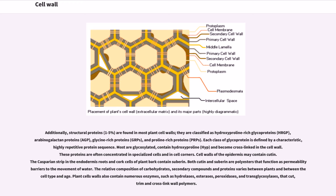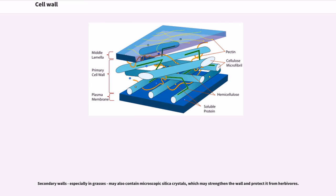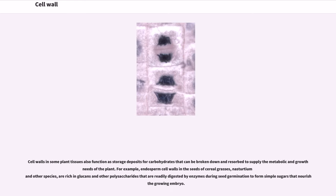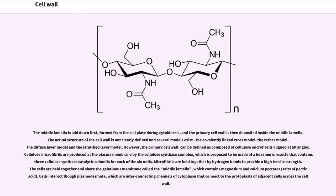These proteins are often concentrated in specialized cells and in cell corners. Cell walls of the epidermis may contain cutin. The Casparian strip in the endodermis roots and cork cells of plant bark contain suberin. Both cutin and suberin are polyesters that function as permeability barriers to the movement of water. The relative composition of carbohydrates, secondary compounds and proteins varies between plants and between the cell type and age. Plant cell walls also contain numerous enzymes, such as hydrolases, esterases, peroxidases, and transglycosylases, that cut, trim and cross-link wall polymers. Secondary walls, especially in grasses, may also contain microscopic silica crystals, which may strengthen the wall and protect it from herbivores. Cell walls in some plant tissues also function as storage deposits for carbohydrates that can be broken down and resorbed to supply the metabolic and growth needs of the plant. For example, endosperm cell walls in the seeds of cereal grasses, nasturtium and other species, are rich in glucans and other polysaccharides that are readily digested by enzymes during seed germination to form simple sugars that nourish the growing embryo.